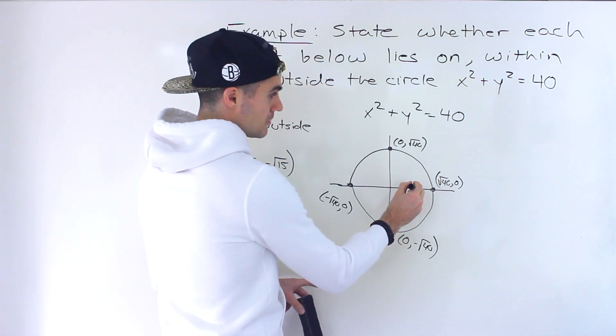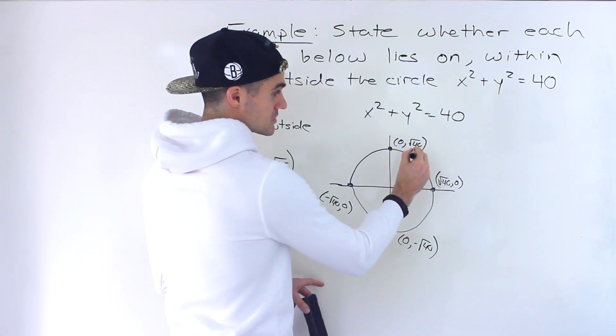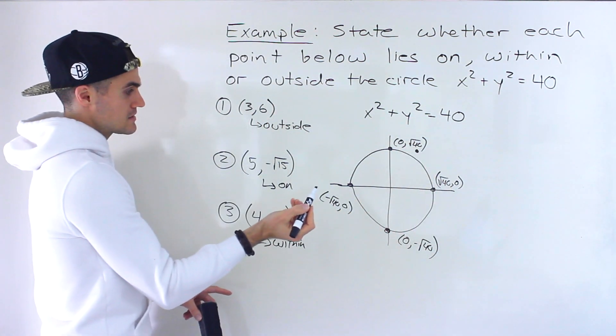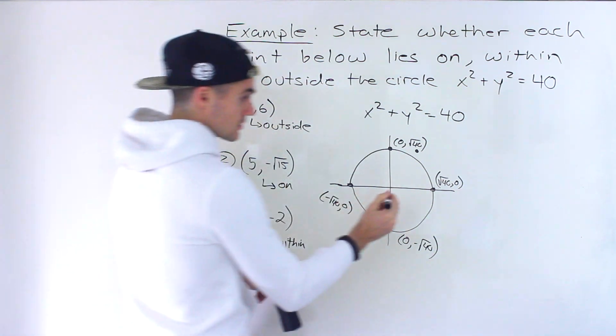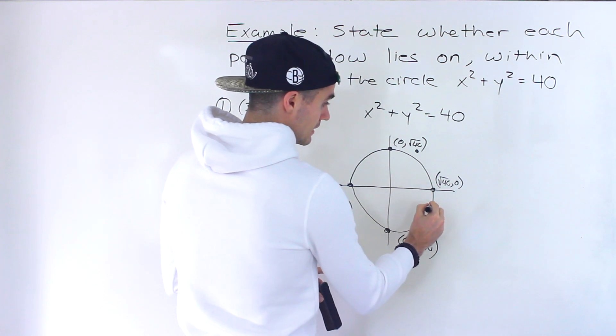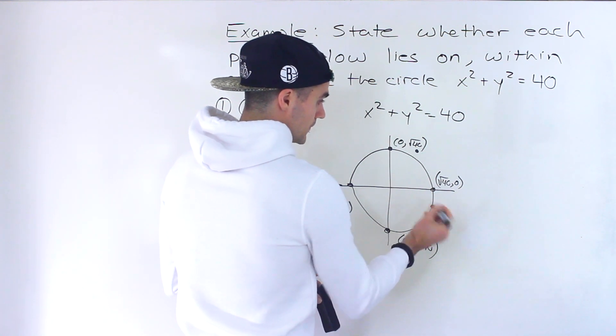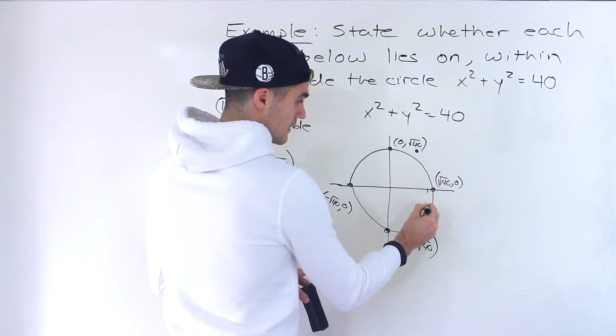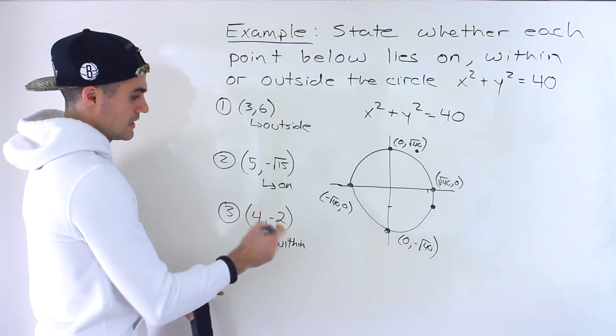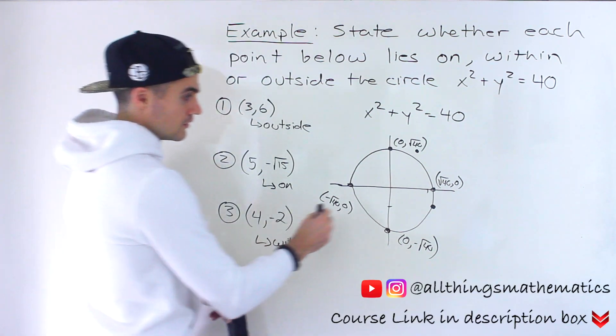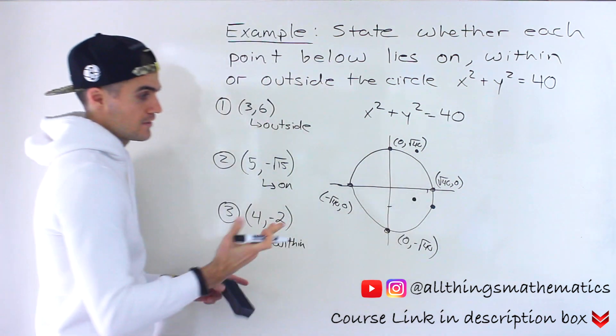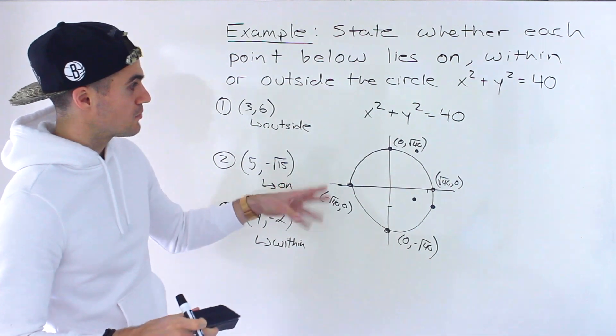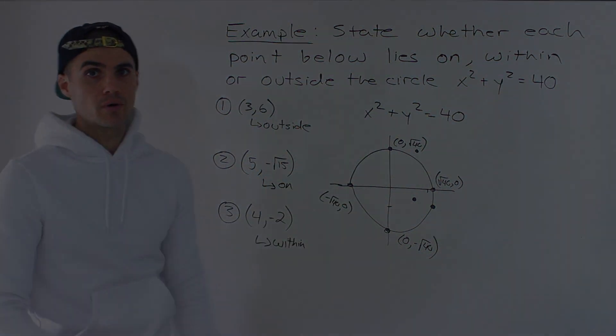If we were to plot these points, 3 would be somewhere here but 6 would actually be outside, so that point would be somewhere like there. 5 comma negative root 15, we said that's going to be on the circle, so that's going to be over here, like positive 5 negative root 15. And then 4 and negative 2, that's going to be over here within the circle. So you can show this both algebraically and graphically.